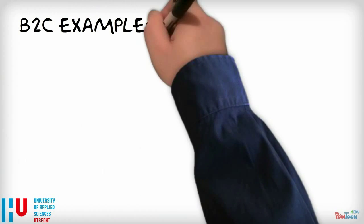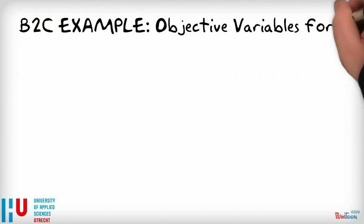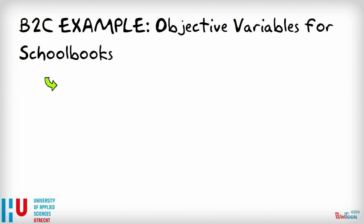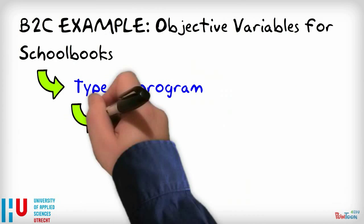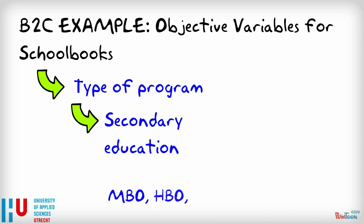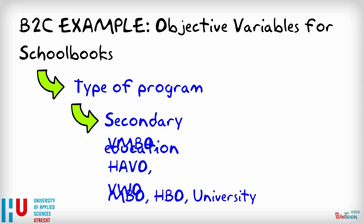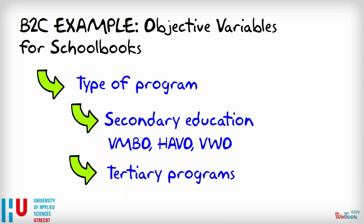An objective variable for segmenting the market for school books in the Netherlands that we could use is the type of education program. Firstly, there are the secondary education programs: VMBO, HAVO, and VWO. And then there are the tertiary programs, including all the diverse MBO, HBO, and University programs.